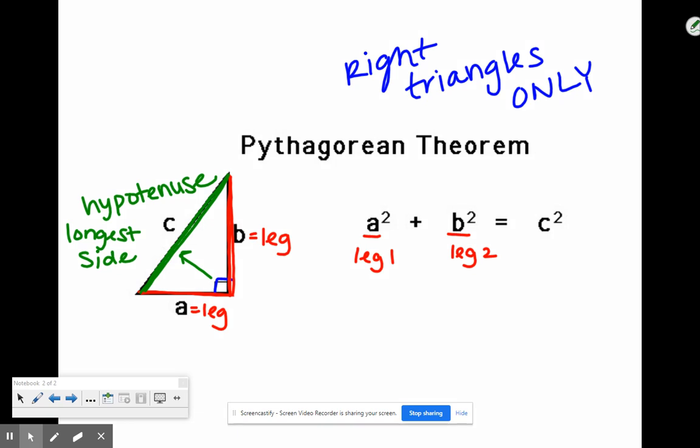Then, C is the hypotenuse, that longest side, and that side length will always go in for C into the equation. Please pause the video and take down all of these notes, they are important so that you understand how we're going to do these next few problems.